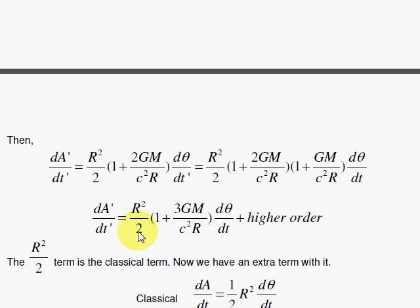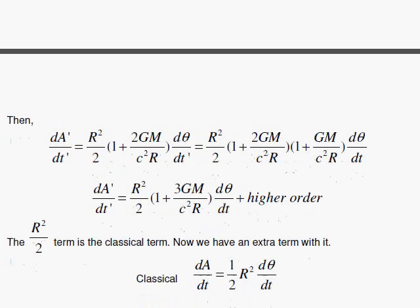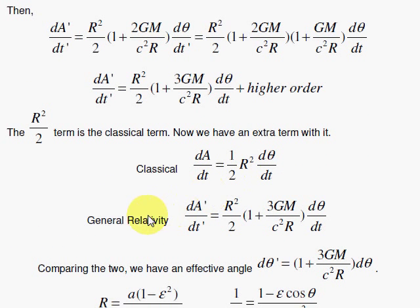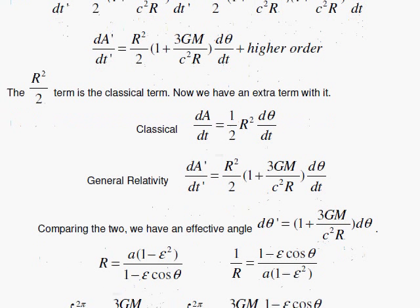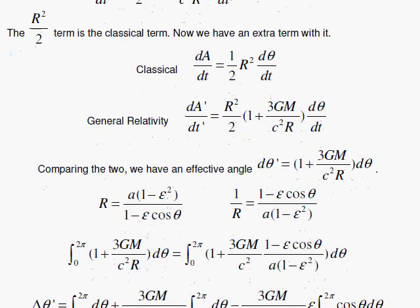Notice the R² over 2 is the classical term. Let's go ahead and compare these. There's classical, and here is general relativistic, with this extra piece in here. Comparing the two, we can see that instead of having a dθ, we have a distorted angle, a dθ', given by that. And when we integrate this, now what we're going to do is integrate this from 0 to 2π, and you'll get 2π plus an advancement, and that's the advance of the perihelion of Mercury.